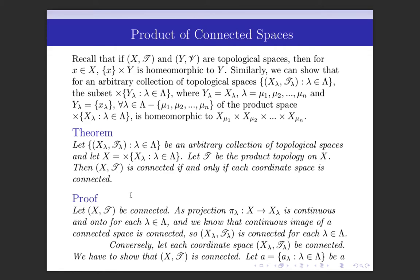Let (X, T) be connected. We have to prove that each coordinate space is connected. As we know, the projection π_λ from X to X_λ is continuous and onto for each λ in Λ. We also know that the continuous image of a connected space is connected. So X_λ here is the continuous image of connected space X, so each X_λ is connected. Thus each coordinate space is connected.